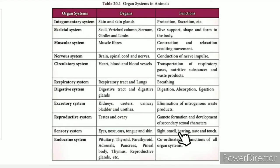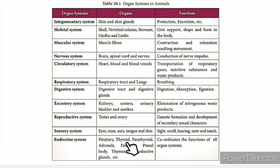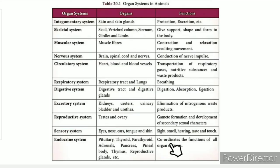The endocrine system includes ductless glands. These include the pituitary, thyroid, parathyroid, adrenal glands, pancreas, pineal body, thymus, and reproductive glands. All of these perform specific functions in regulating the body.